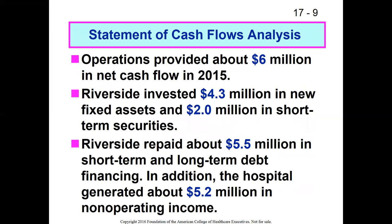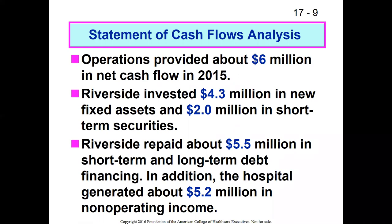Summarizing: operations provided about $6 million in new cash in 2015, but they invested about $4.3 million in new assets and $2 million in short-term securities, then repaid a bunch of debt. There's a slight decrease in cash, but they seem to be putting money to good use — purchasing equipment, investing in short-term securities, and reducing outstanding debt. A decrease in cash is not a problem as long as the organization maintains a sufficient level of cash.